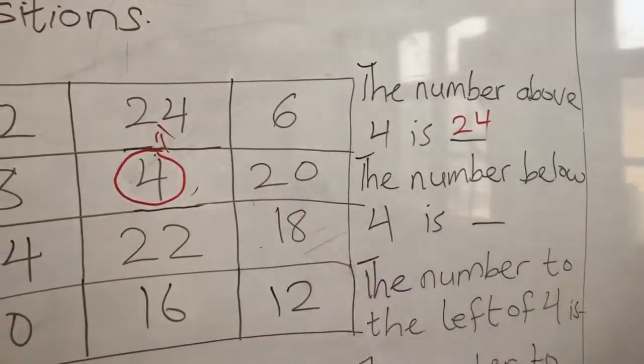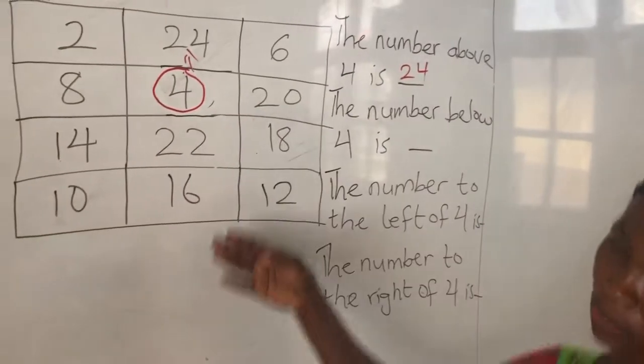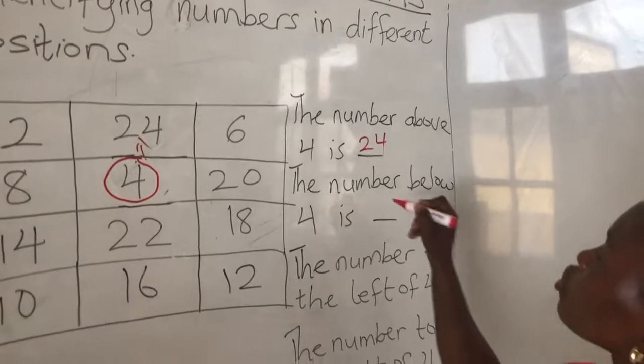Looking at this same 4, the number below 4. Below means down. So, below 4 is what? 22.